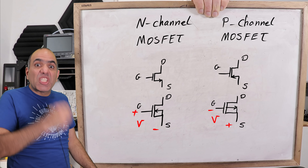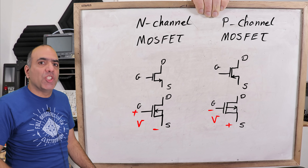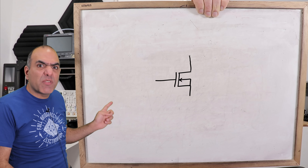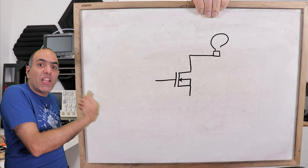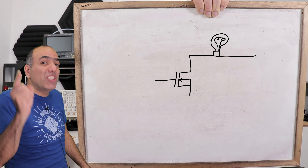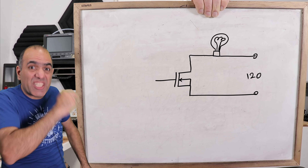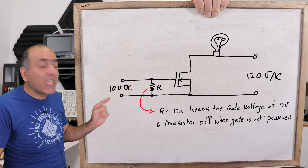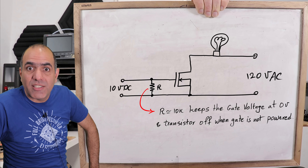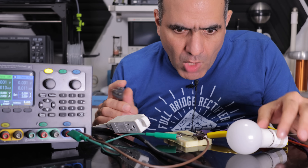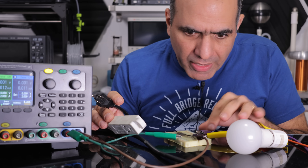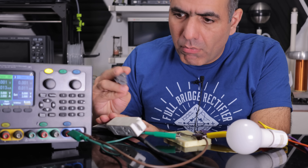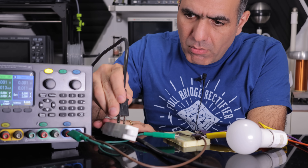Let's make something — a simple switch. I'll use an N-channel MOSFET to turn on a light bulb on 120 volts AC, connecting the gate to a 10-volt DC supply. All is connected right? There we are.